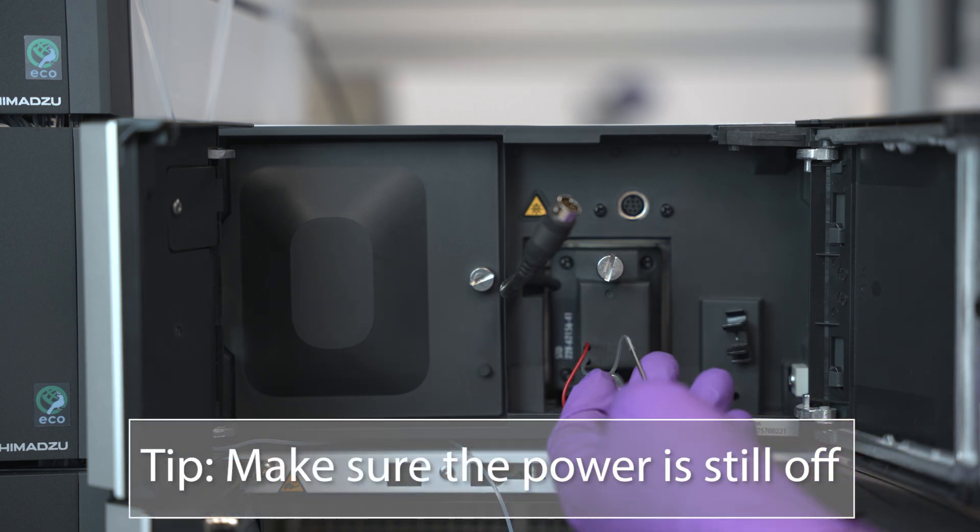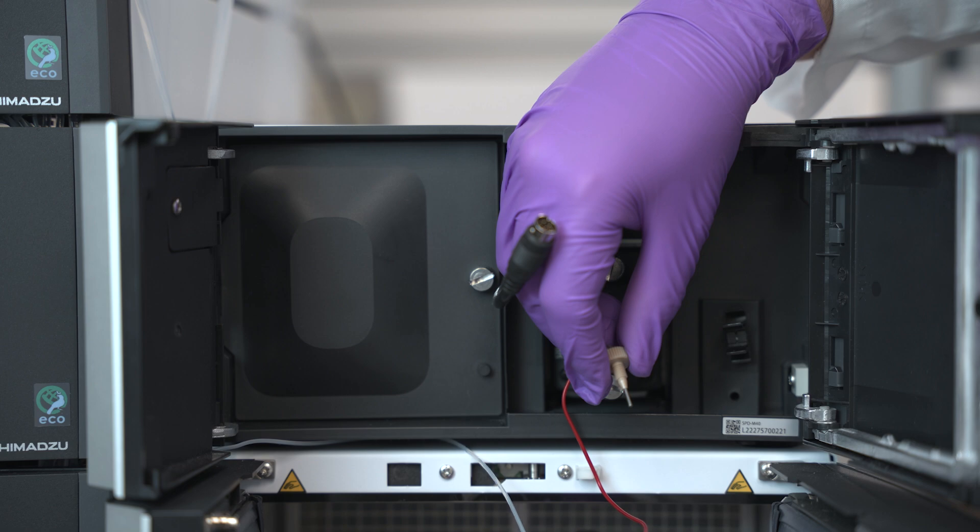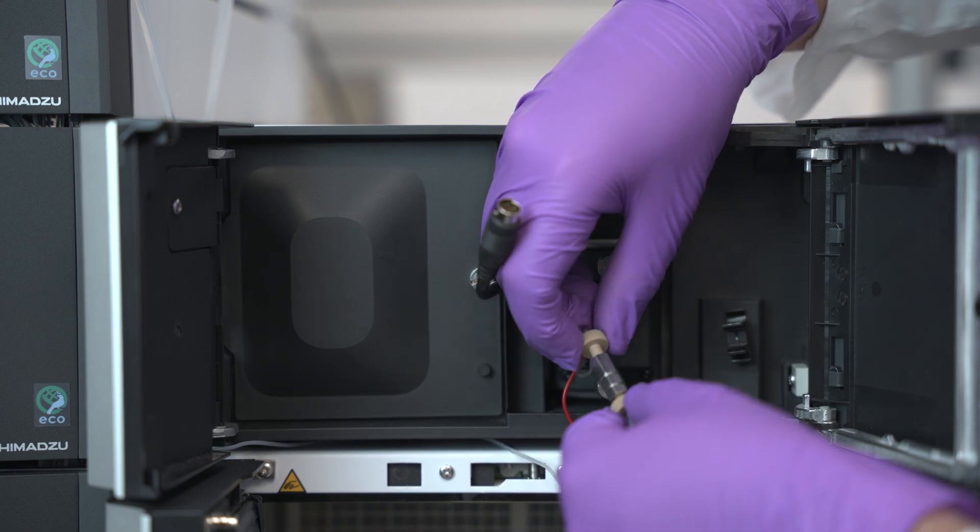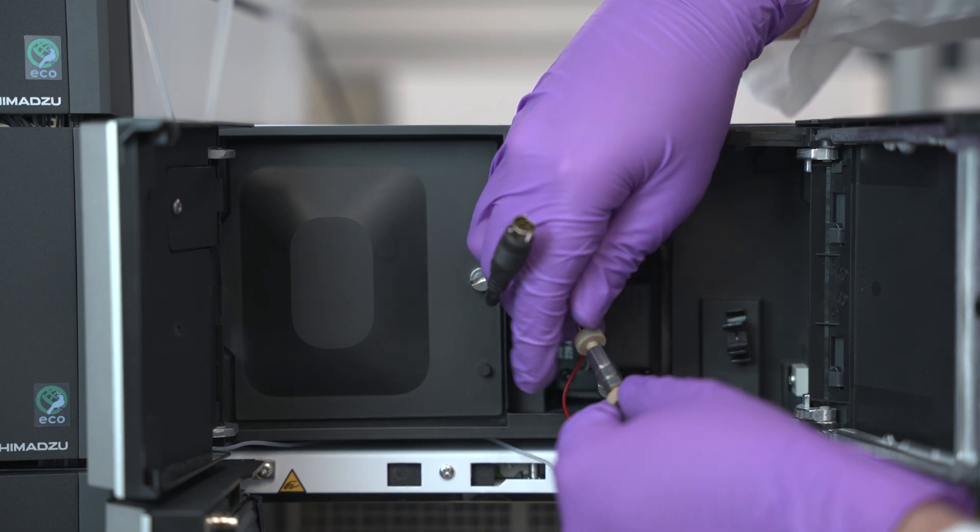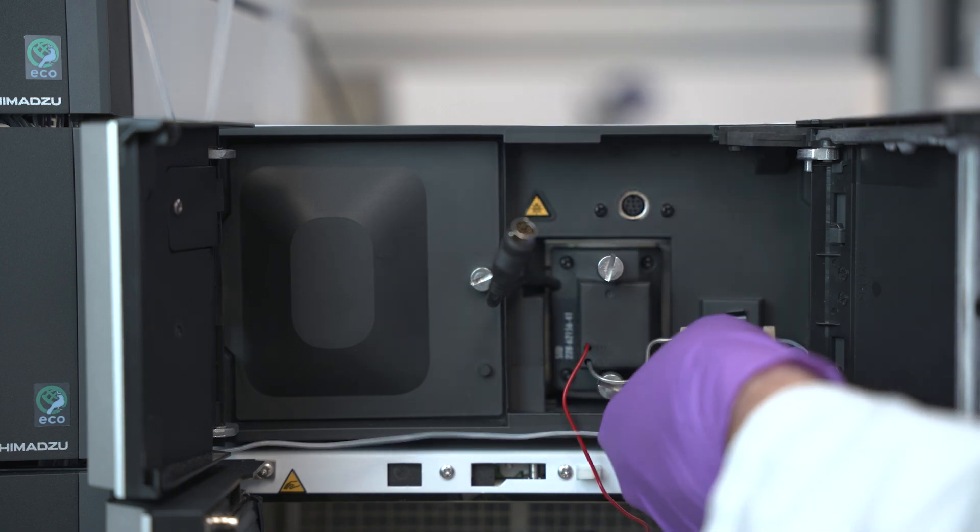Make sure the main power is still off. Attach the inlet and outlet tubing to the appropriate unions on the flow cell and fix them to the detector with the coupling holder.